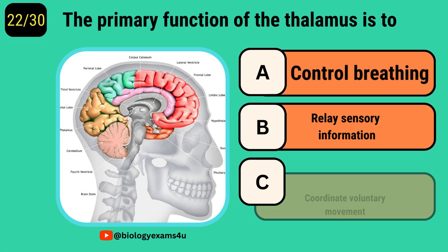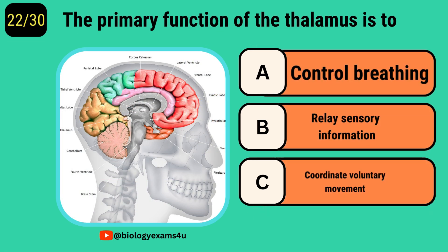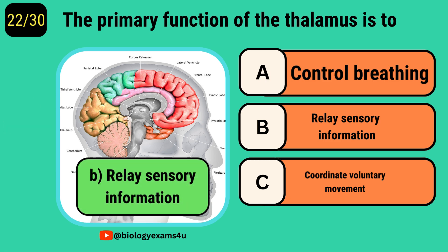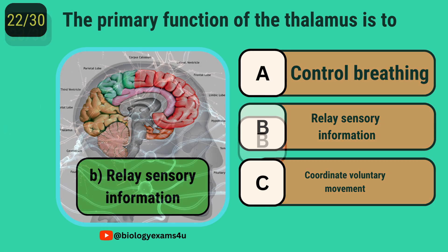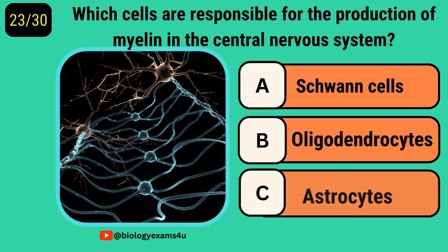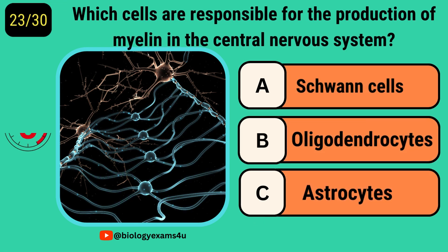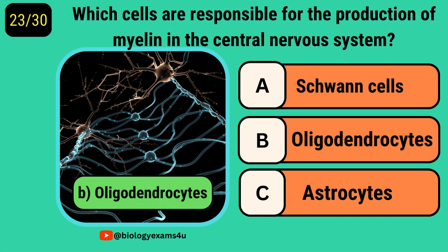The primary function of the thalamus is to? Relay sensory information. Which cells are responsible for the protection of myelin in the central nervous system? Oligodendrocytes.